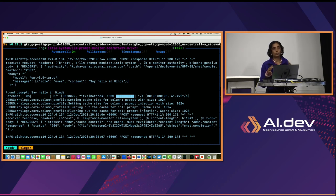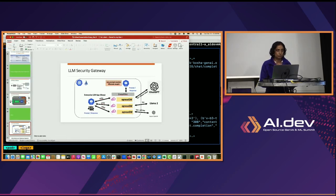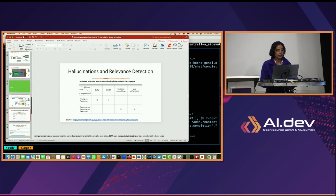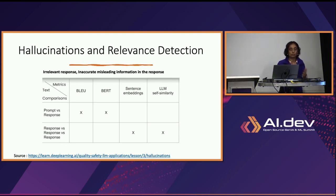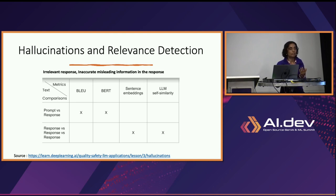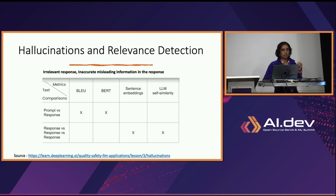This is how you can start enabling large language model security. For detecting prompt request-response issues, I'll take a look at three slides and then go to Colab to show more. I took a deep learning course from Whylabs on quality and safety for LLMs. The way to look at hallucination and relevance detection is to compare prompt and response, or ask your large language model the same question multiple times and compare the multiple responses.